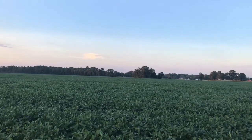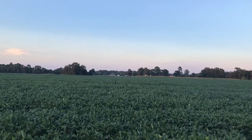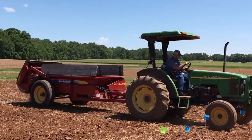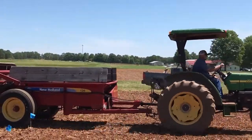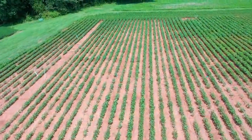When it came down to the biomass, we saw an increase in tissue nitrogen for our higher fertilizer treatments. Moving on to yield, we actually did not see any significant differences. No matter if we were applying one ton or six tons of litter — 15 to 240 pounds per acre of nitrogen — there were no yield differences.